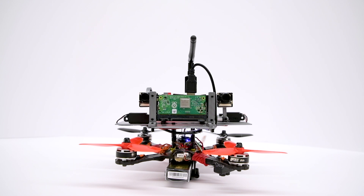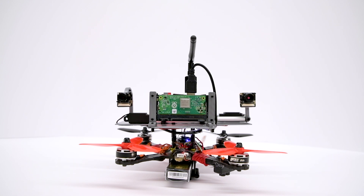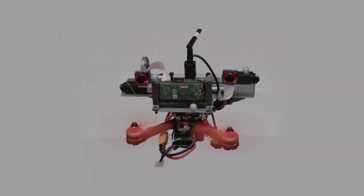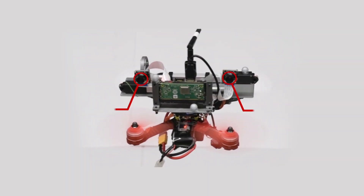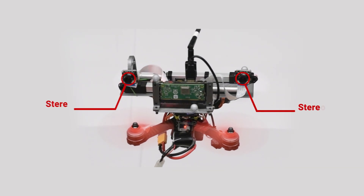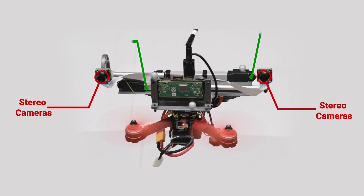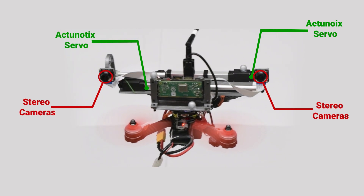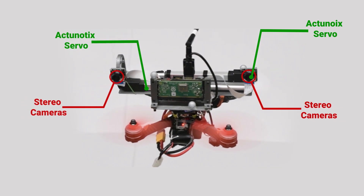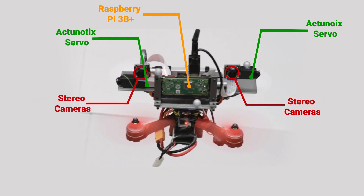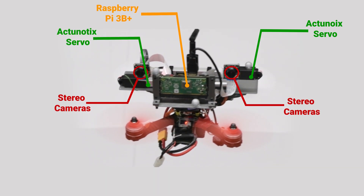we develop a stereo vision system for quadrotors which can change its baseline to adapt its depth sensing range based on the task. Our system consists of a stereo camera setup mounted on two linear servo motors whose baseline can be changed by a microcontroller. All the depth computation and control calculations are done onboard the Raspberry Pi 3B+.